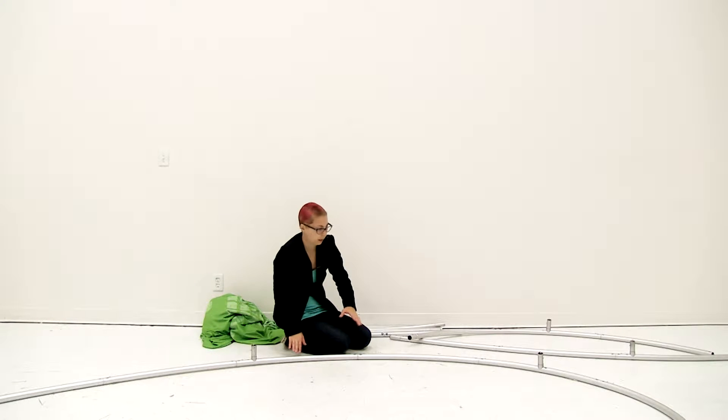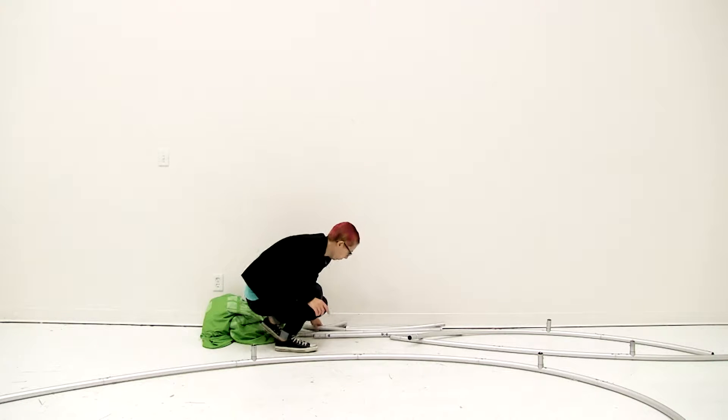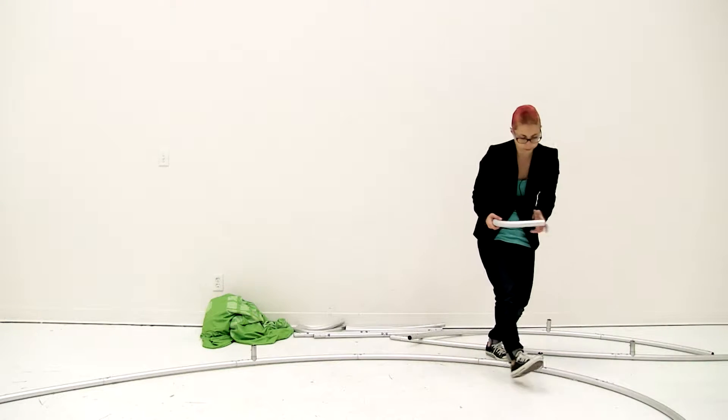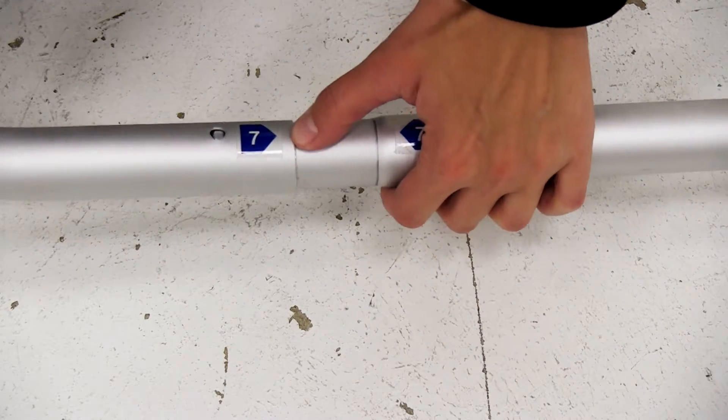Now that I have the base of my frame, I'm going to start working up. I'm going to start connecting the ends with the like numbers and then start connecting the poles. I'm just going to match up the numbers and using the snap button secure into place.